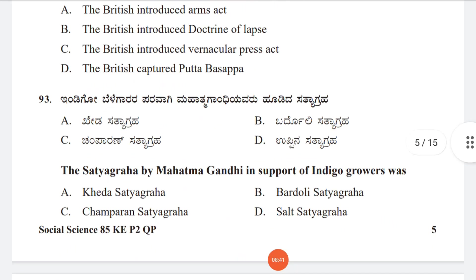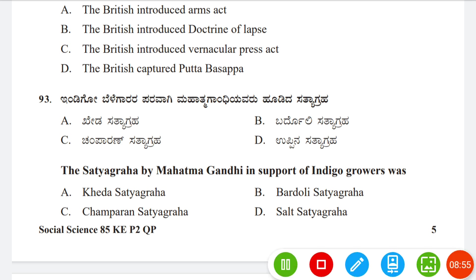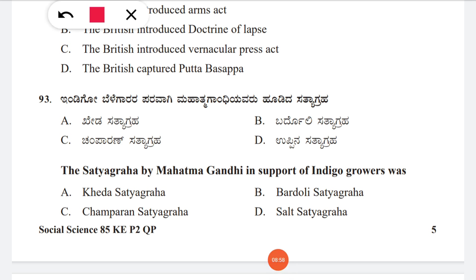Question 93: The Satyagraha by Mahatma Gandhi in support of indigo growers — option A: Kheda Satyagraha, B: Bardoli Satyagraha, C: Champaran Satyagraha, D: Salt Satyagraha. The correct answer is C, Champaran Satyagraha.